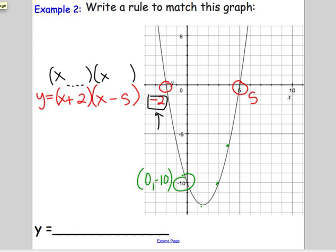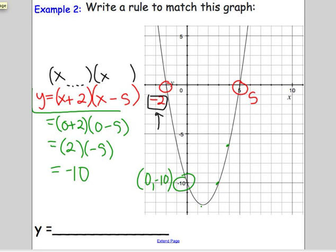So once again, I'm going to use my y-intercept to check my answer. So when I plug in 0 for x, I should get negative 10 if my rule is correct. And it looks like I get 2 times negative 5, which is in fact negative 10. So my rule here in red is the correct rule for this equation.